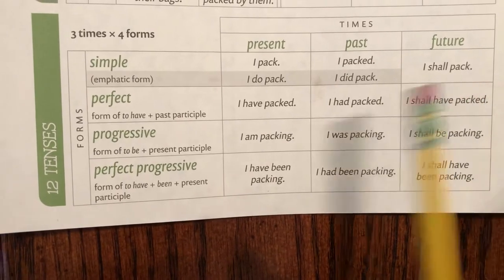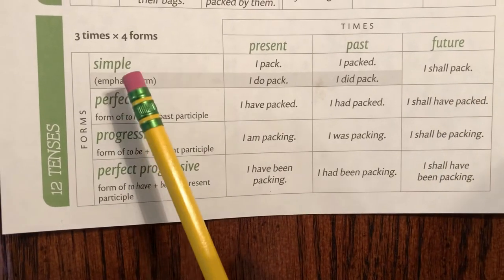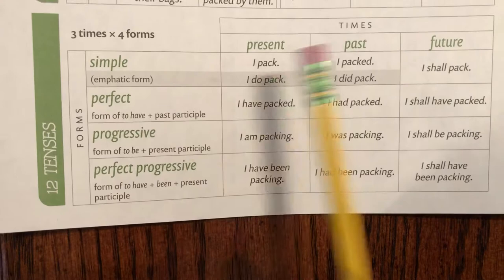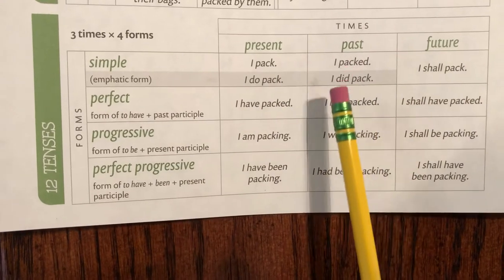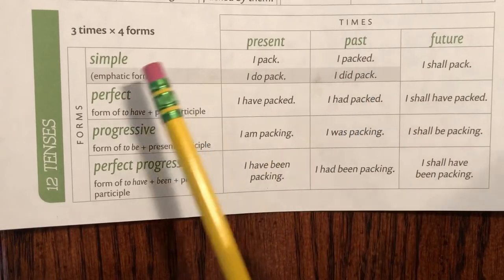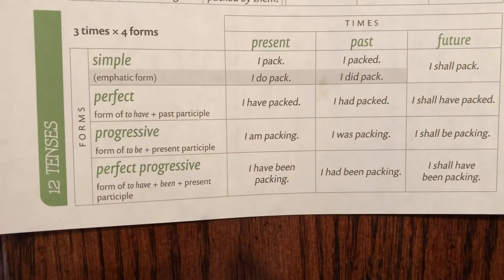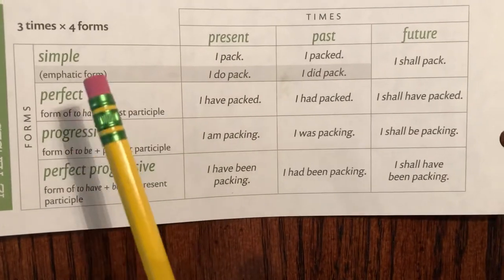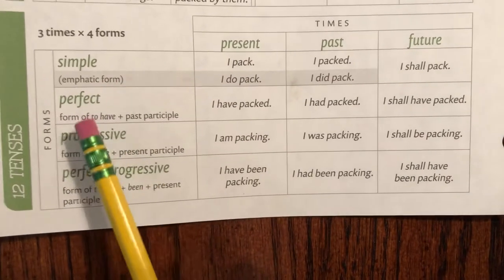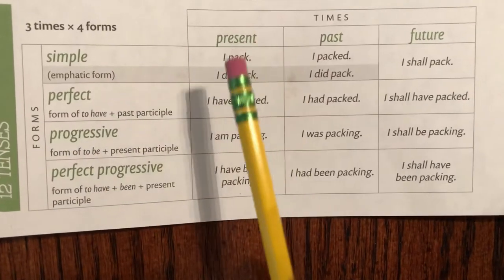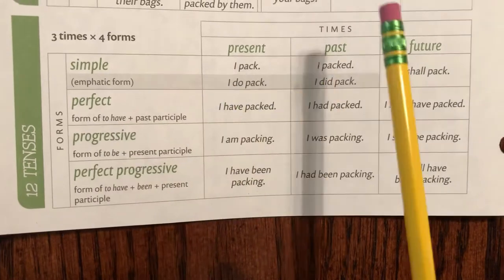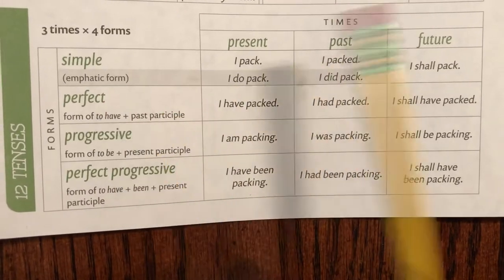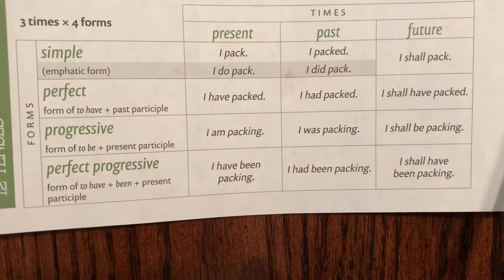12 verb tenses. Emphatic present: I do pack. Emphatic past: I did pack. Emphatic future — there's not one simple emphatic form. Perfect present: I have packed. Perfect past: I had packed. Perfect future: I shall have packed.